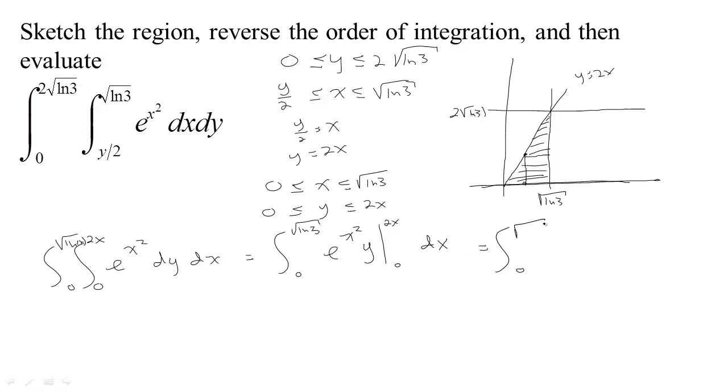So we get the integral from zero to the square root of the natural log of three. If we plug in 2x for y, we get 2x e to the x squared, minus if you plug in zero, we get zero. So there's our answer.